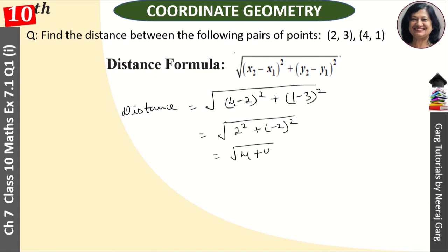4 plus 4 it means root 8 and root 8 we can write, 8's factors are 2 into 2 into 2 and it will be a pair so this will come 2 root 2 units.